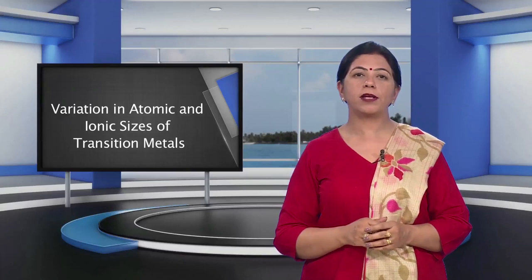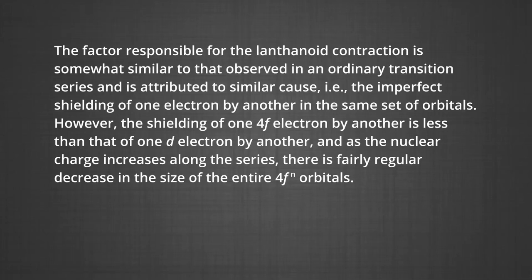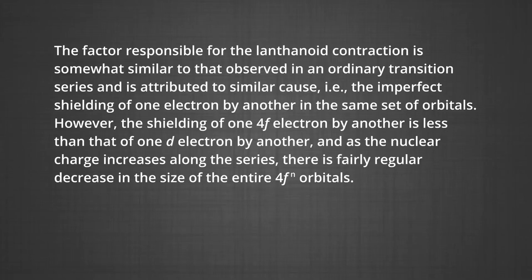The figure shows the trends in the atomic radii of the transition elements. The factor responsible for the lanthanoid contraction is attributed to the imperfect shielding of one electron by another in the same set of orbitals. The shielding of one 4F electron by another is less than that of one D electron by another. As the nuclear charge increases along the series, there is a fairly regular decrease in the size of the entire 4F orbitals.